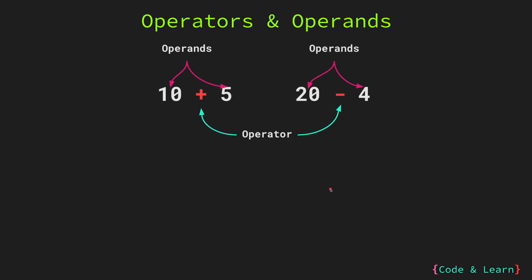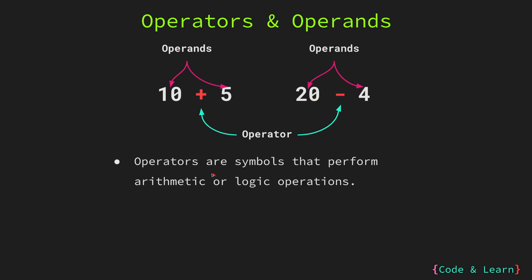Before we start, let us first discuss operators and operands. Here we have two expressions. The first represents addition of 10 with 5 and the second one represents subtraction of 4 from 20. The plus and minus signs are the operators in these expressions, and 10, 5, 20, and 4 are the operands. Operators are symbols that are used to perform arithmetic or logical operations. The ones we have here are performing the arithmetic operations of addition and subtraction. Operations are performed on the operands, as we saw in the example.